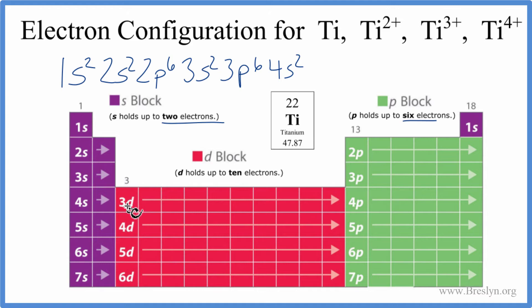4s2, and we've used a total of 20 electrons. So we have two more. 3d. D can hold up to 10. But we don't need 10. We only need two more. So we're just going to put 2 in the 3d orbital. And this is the electron configuration for titanium. Neutral titanium is found on the periodic table.